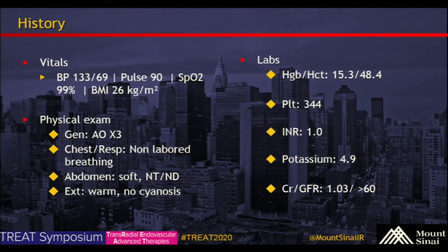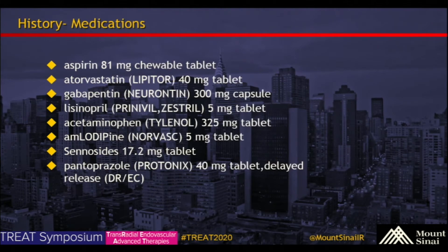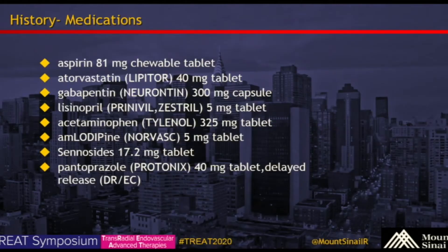His vitals are within normal limits. Physical exam as stated on the slide. With vascular exam specifically, he has no palpable DP on the left or PT, and labs are within normal limits. His medications include aspirin, lipid-lowering agents, gabapentin, and antihypertensives.